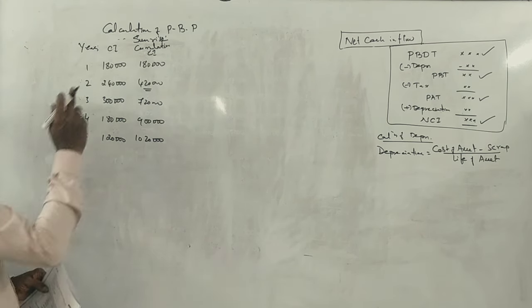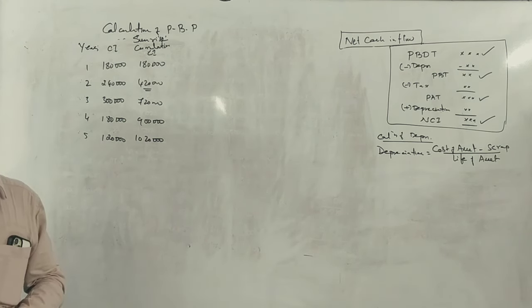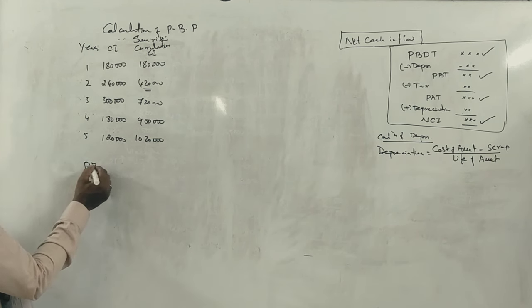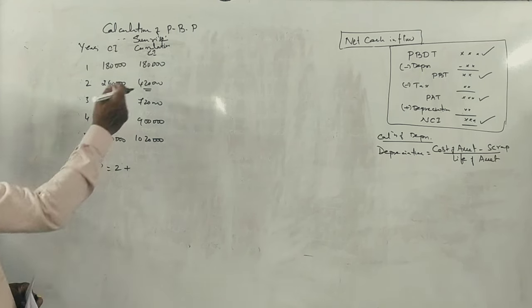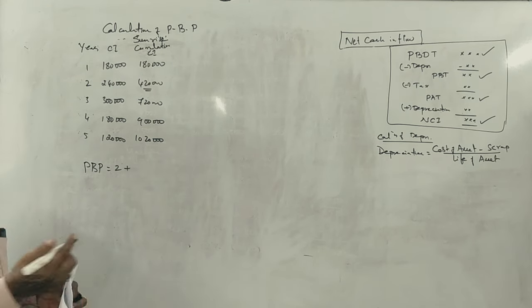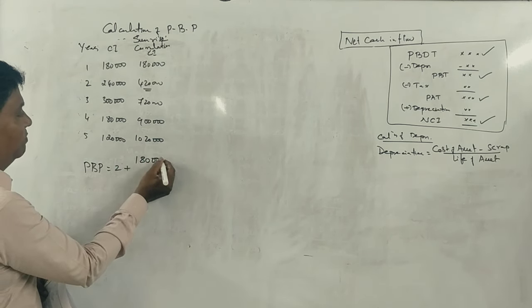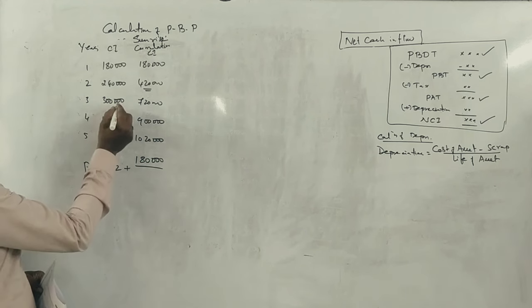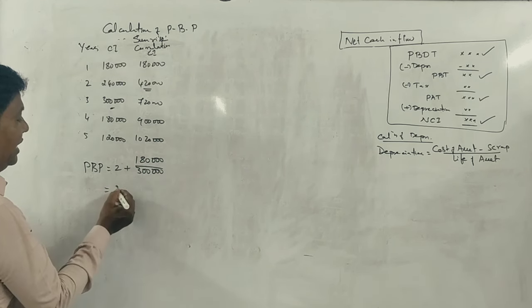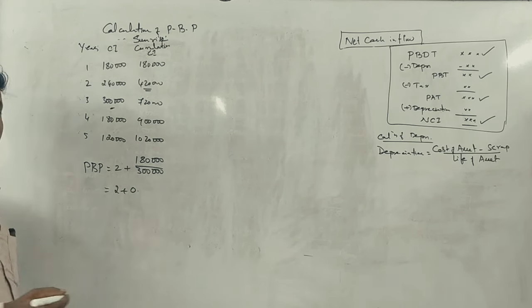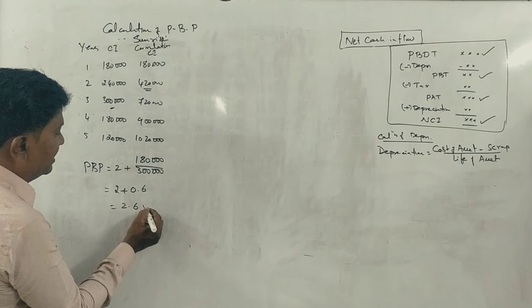You have 4 lakhs. You have 4 lakh 20 in 2nd year. That means payback period is equal to 2nd year. 6 lakhs minus 4 lakh 20 equals 1 lakh 80. 3 lakh rupees. 2 plus 1.8 divided by 3 equals 2.6 years.